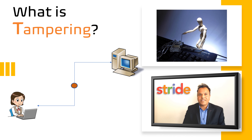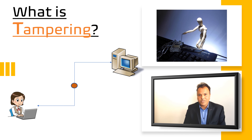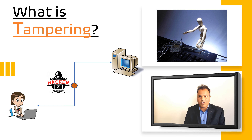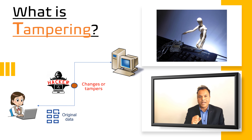The next letter T in STRIDE stands for Tampering. Tampering, or changing data, is a type of attack where a user performs a man-in-the-middle attack — when a request is sent from point A to point B, the attacker intercepts the data over the wire and changes it for personal gain.